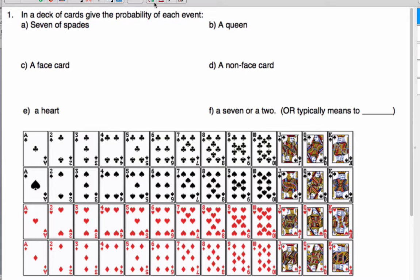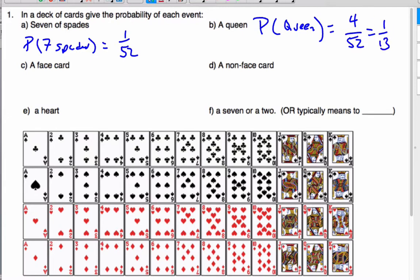So if I'm looking for the probability of a seven of spades, well, I know I have this one card out of 52. If I'm looking for the probability of a queen, of all these cards, if I randomly select one, I have four queens here. And so it's four out of a total of 52. Or I could simplify that to one out of 13.